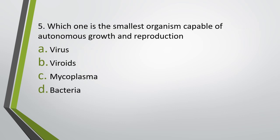Question number five: Which one is the smallest organism capable of autonomous growth and reproduction? (a) virus, (b) viroids, (c) mycoplasma, (d) bacteria. Correct answer is option C: mycoplasma.